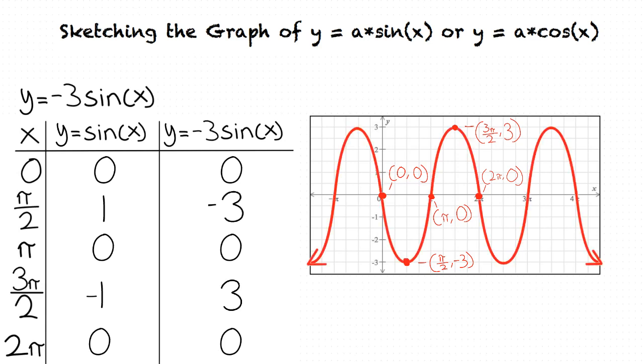I think I'm starting to understand the topic, but let me summarize just to make sure. In order to graph a y equals a sine of x or y equals a cosine of x equation, we first find the key points of a sine or cosine equation. After that has been completed, we distribute our a variable into the y values of the key points. We then plug our new y values into our graph, which results in the graph of the equation.